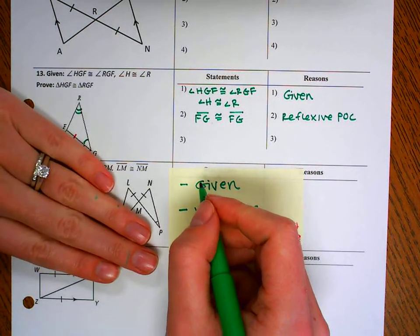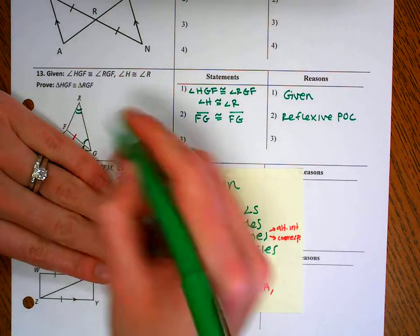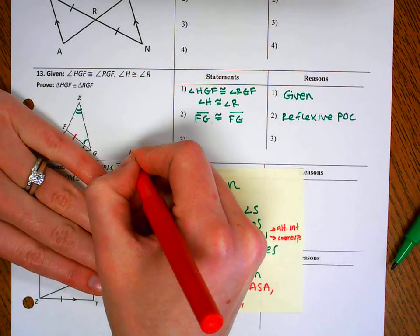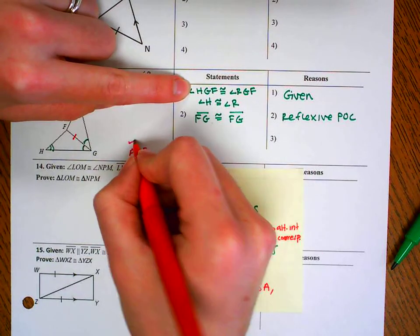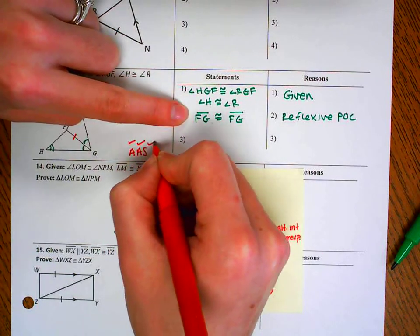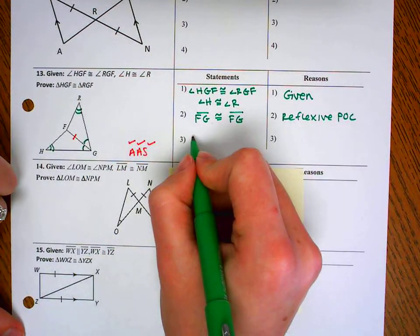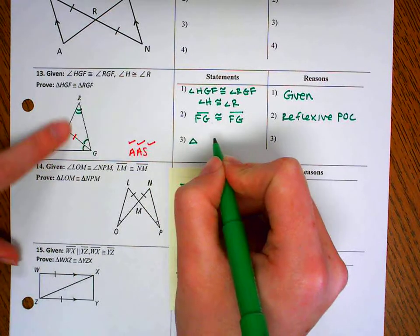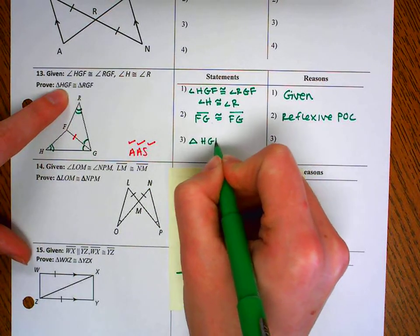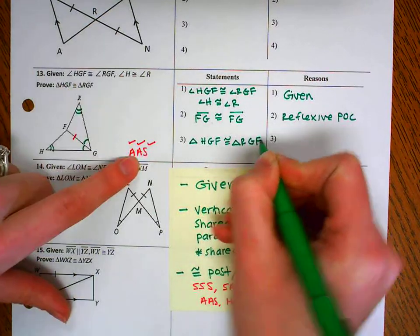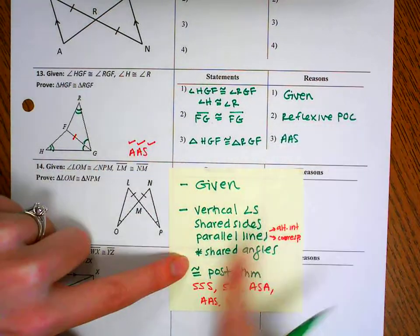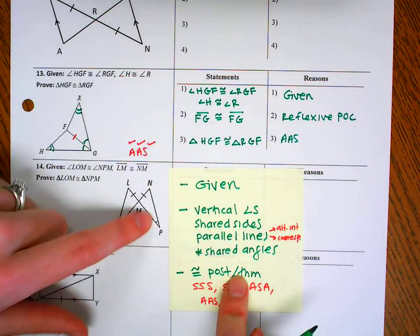Now I have three pieces of information. If I look, I have two angles. The side is not directly in between. So that's going to be AAS. I have a pair of angles, a second pair of angles, a pair of shared sides. So now I can prove that my triangles are congruent because of AAS. That was my last step, my congruence postulate theorem.